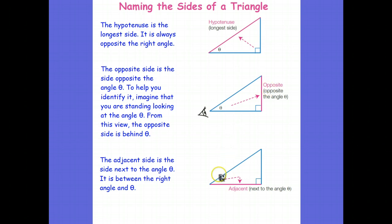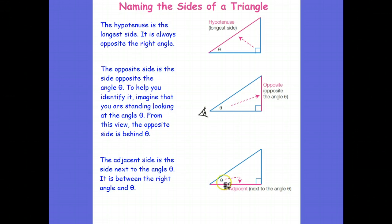Finally, the other side — the one that's next to the angle. This angle has the hypotenuse on one side, and the other side that makes up the angle is called the adjacent side. Adjacent means next to, so it's the side that's next to the angle. So the first thing you have to do when using trigonometry with a right angle triangle is identify the hypotenuse, the opposite side, and the adjacent side.